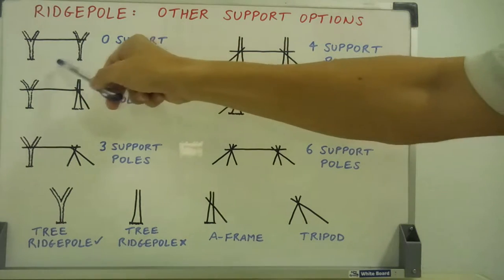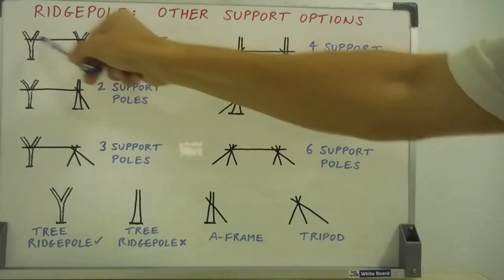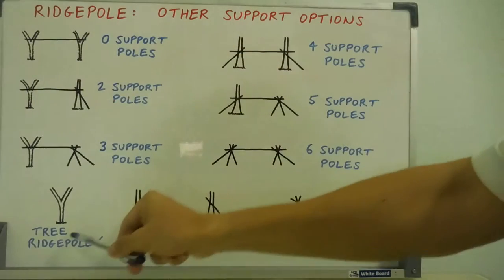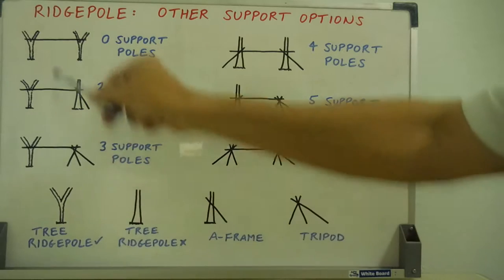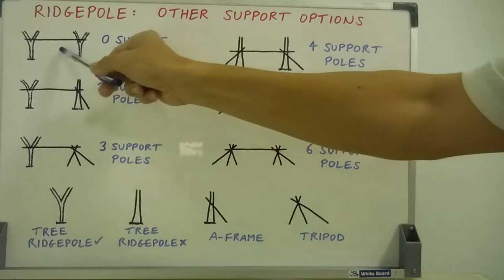You've seen me in previous videos talking about supporting a ridge pole between two trees that can support a ridge pole. That's my little tree that can support a ridge pole. That's the handiest of course for an emergency shelter, no support poles required.